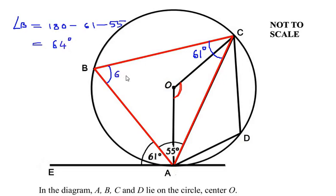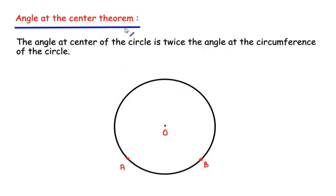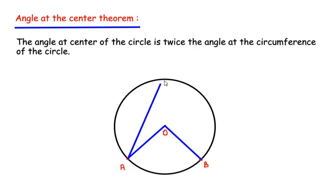Now we use another circle theorem to find angle O: the angle at the center theorem. It states that the angle at the center of the circle is twice the angle at the circumference. For example, if we draw a circle with center O and two points A and B on the circumference, they make an angle at center O and also an angle at a third circumference point C. If the angle at the circumference is 40 degrees, the angle at the center is exactly twice that, which is 80 degrees.